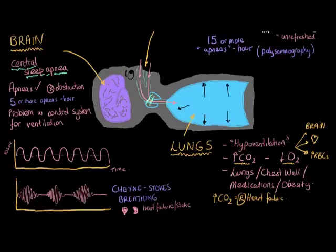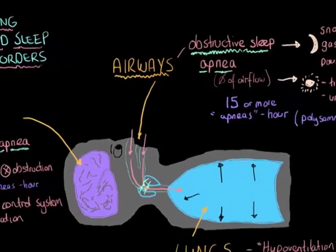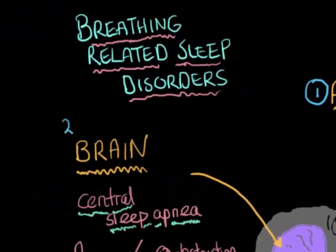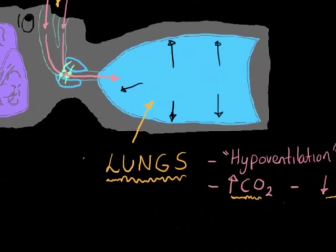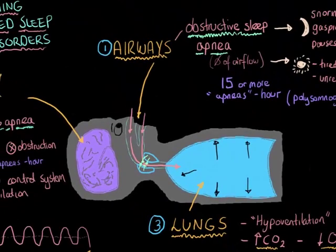So as we can see here, breathing-related sleep disorders, we can really break them down into these three big categories. Are they related to the airways, obstructive sleep apnea? Are they related to the brain, central sleep apnea? Or are they related to the chest wall, the lungs, these sleep-associated hypoventilation conditions or disorders?